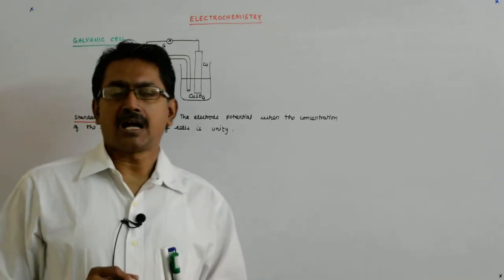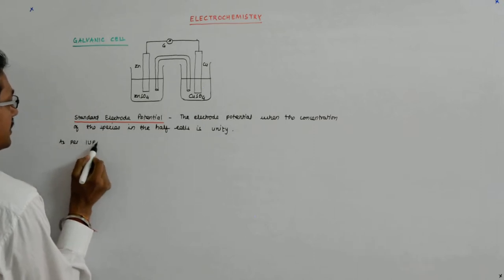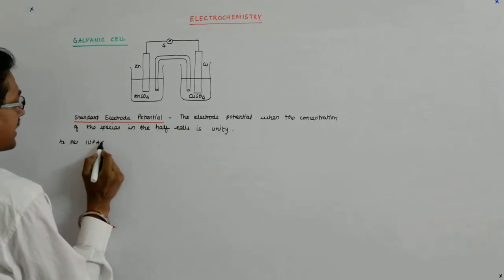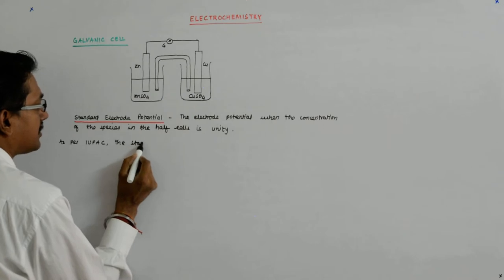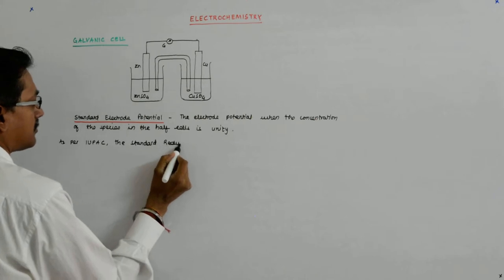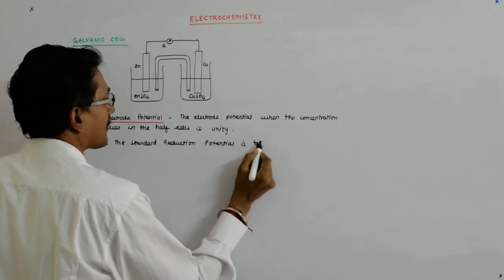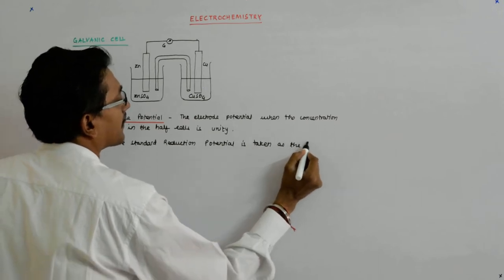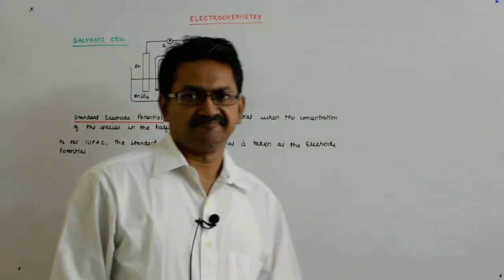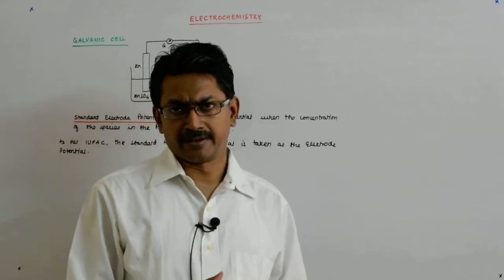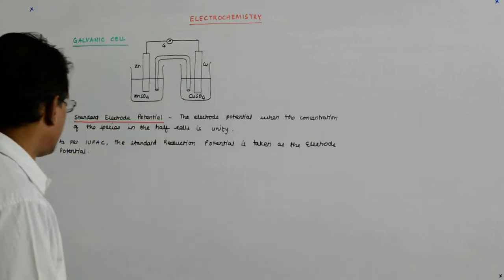As per IUPAC, the standard reduction potentials are taken as the standard electrode potentials. The standard reduction potential is taken as the electrode potential. It is done with a purpose — it could have been the standard oxidation potential, but they have taken the reduction potential as the standard.